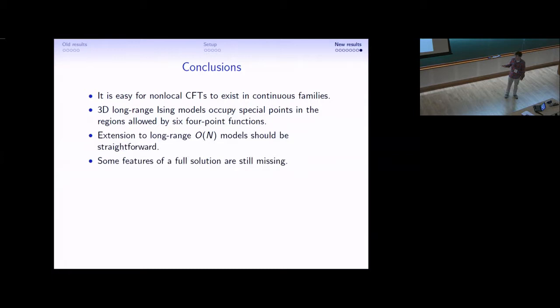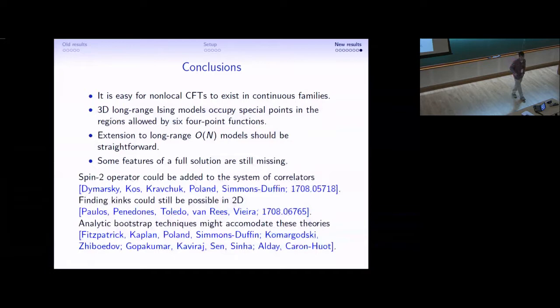At the risk of getting into speculation, I just want to mention that the most promising route towards getting there is probably including the spin-2 operator in our system of external correlators. This would use techniques that are very similar to an impressive paper from August, which bootstrapped a four-point function of 3D stress tensors. If we allow that spin-2 operator to be non-conserved and include scalars in the system, then it's going to become even more numerically intensive, but, nevertheless, it should be possible in the future.